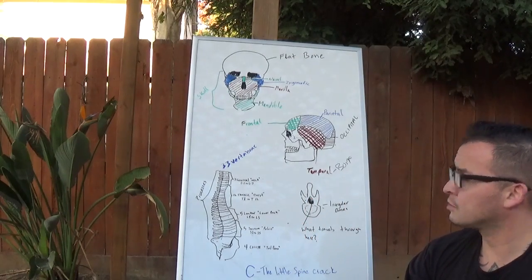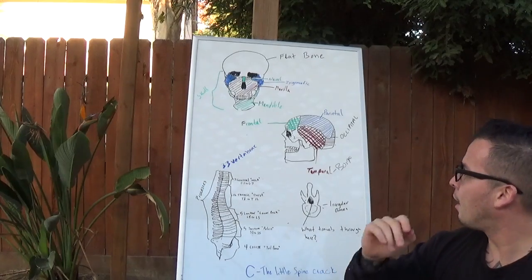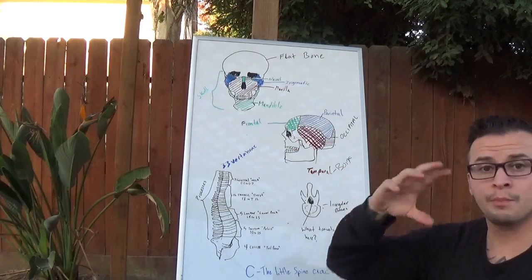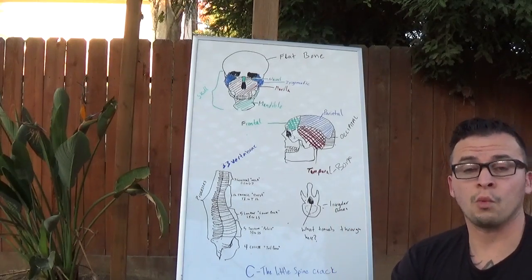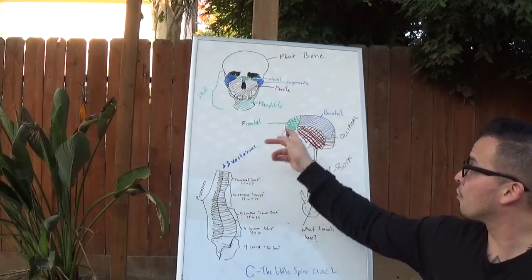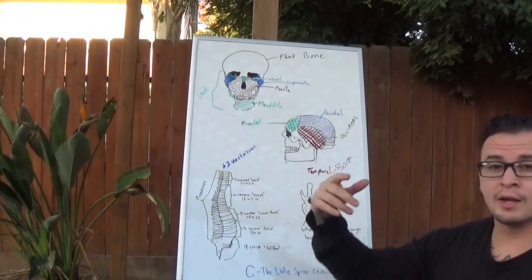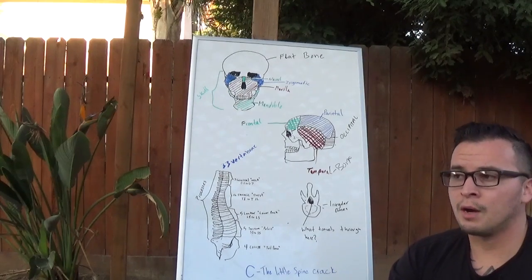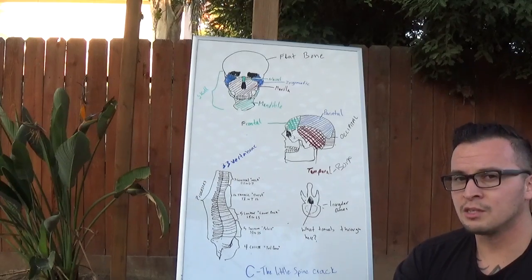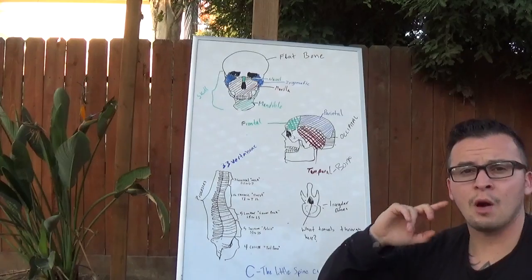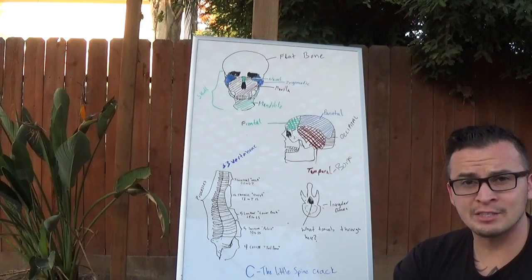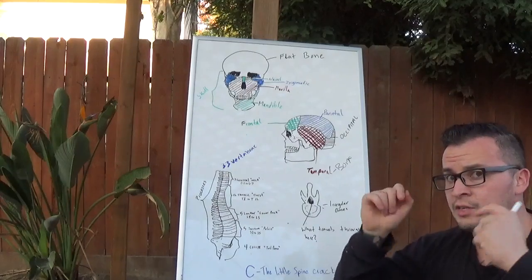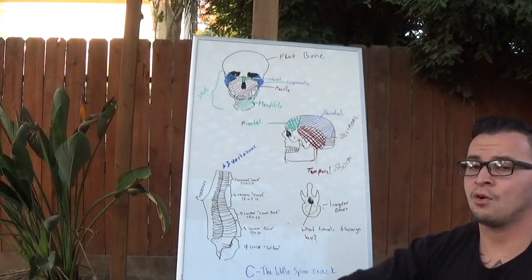I'll touch briefly on the brain lobes, since they're named the same as the cranial bones. The frontal lobe is what lets us be human — it's where we get our judgment from. The temporal lobe deals with speech, hearing, and sensation. The occipital lobe in the back is for vision. I'll cover the full CNS and brain in a separate video.